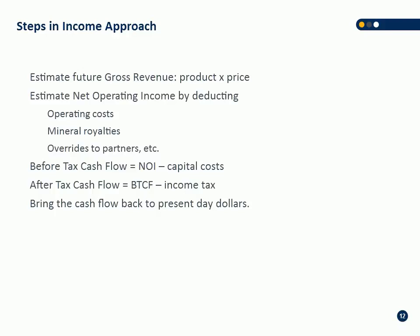You're removing burdens from the income — gross overriding royalties to partners, etc. — and then you calculate before-tax cash flow. Capital cost is one of the last items that comes out; to determine your net operating income it doesn't deduct capital costs. Before-tax cash flow, sometimes abbreviated BTCF, is just your net operating income less your capital costs. If you're in a jurisdiction subject to tax, you determine your after-tax cash flow by removing income tax.